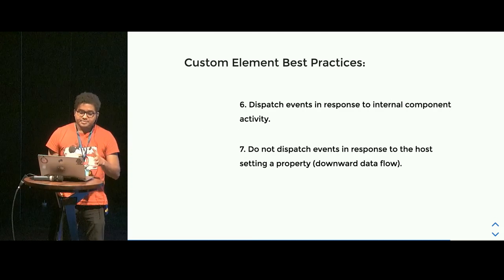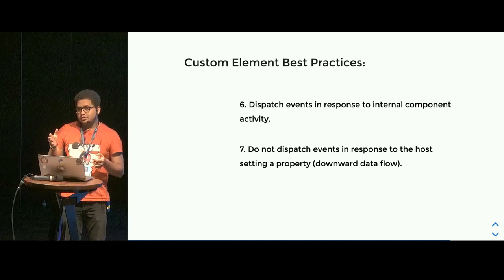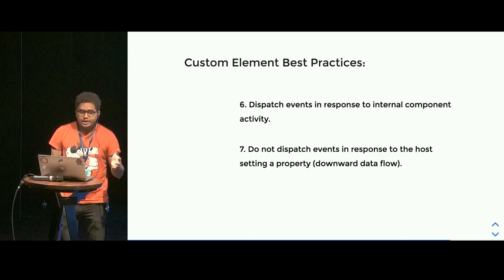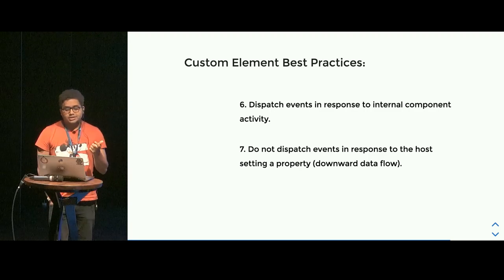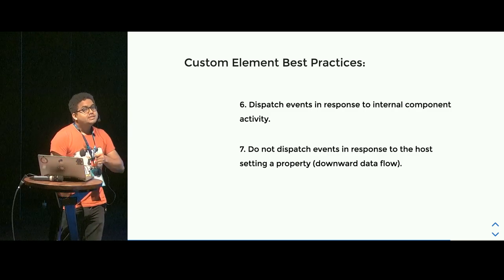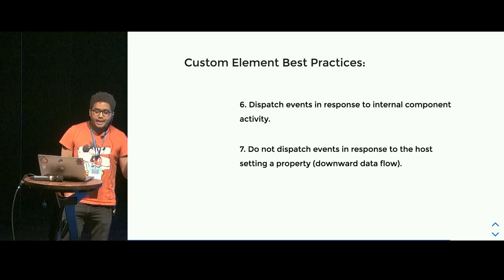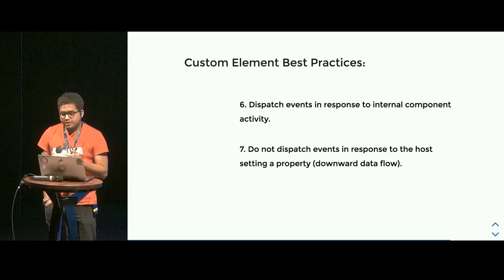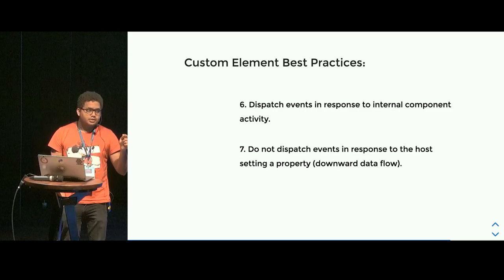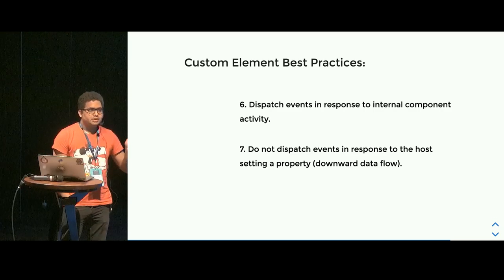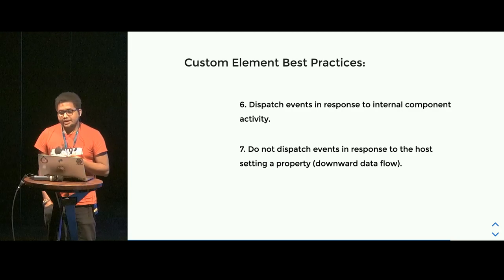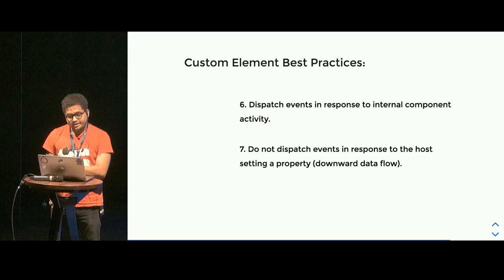Two more best practices. First: for internal component activity, dispatch events. For example, if your component makes an API call and you want to make sure the parent is aware when that call succeeds, dispatch an event so the parent who is using that component knows. If the component doesn't do that, the parent will not know when something has happened. The seventh point goes with it: if a parent is setting some value and you're dispatching a value event, you may create circular data dependencies. What I mean is: the parent sets some value, you dispatch an event, the parent listens to that and sets another value — that can get you into an infinite data loop, which you don't want in a data binding system.